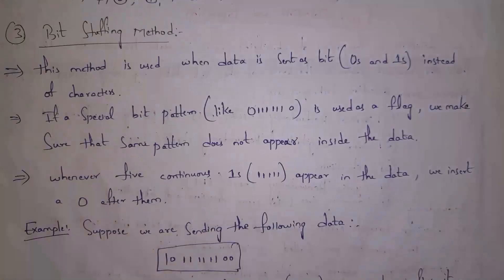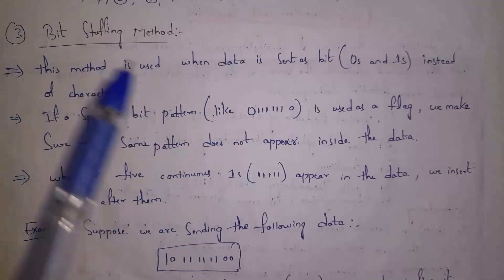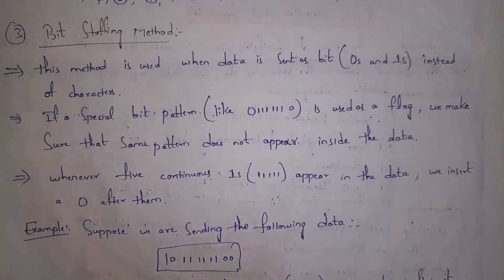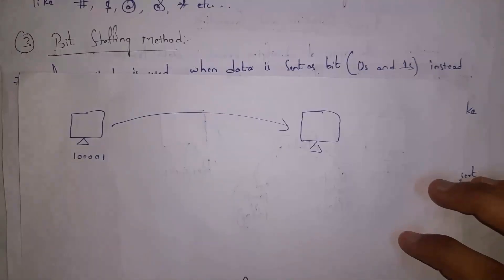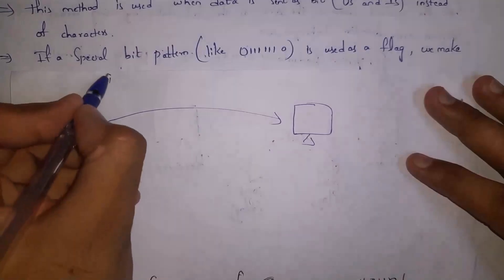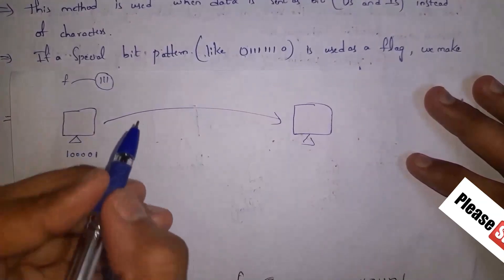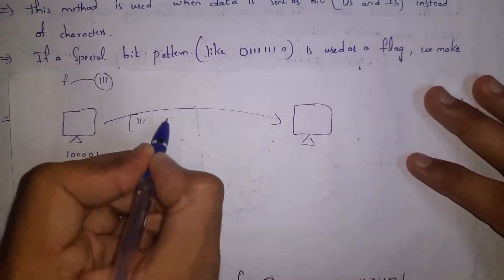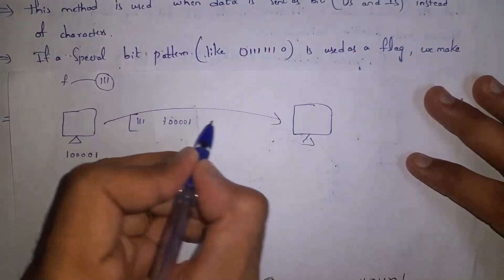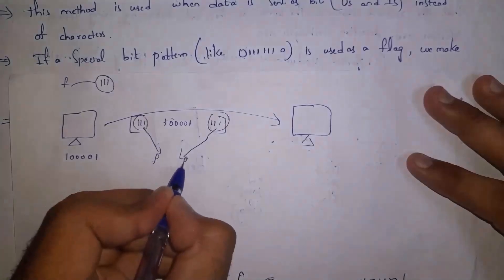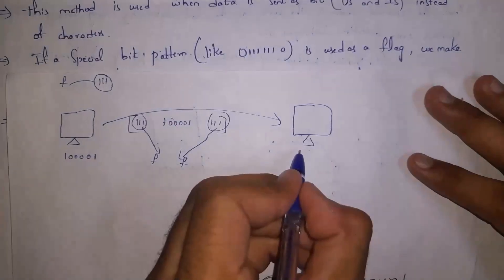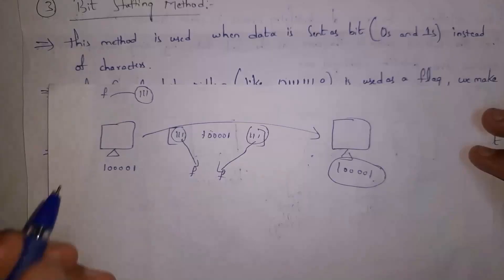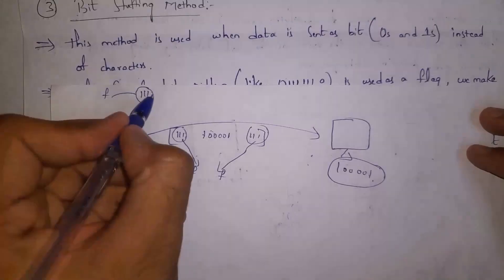The last method is Bit Stuffing. In character stuffing we add special characters as flags, whereas in bit stuffing we add bits as flags — bits being zeros and ones. For example, if the sender wants to send data like '100001', the bit stuffing method adds some bits as flags. Let's take the flag as '111' (triple one). So bit stuffing adds '111' at the start, then the actual message '100001', and again '111' at the end. Both are flags, and the receiver removes them and reads the actual message '100001'.